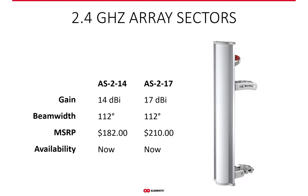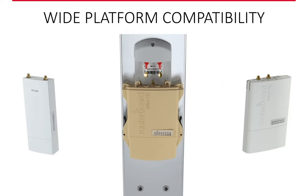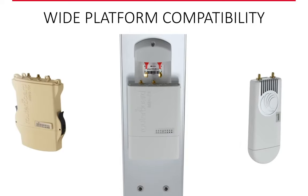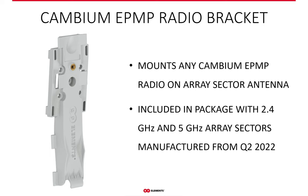The two 2 GHz array sectors are available now, with one at 14 dBi and the other at 17 dBi gain, priced at $182 and $210 USD. The 2 GHz array sector antennas have our standard RPSMA interface that lets you connect most common 2 GHz radios used in the WISP industry, and the interface is now protected by a plastic hood. Starting from the second quarter of 2022, we will include a mount for any Cambium ePMP radio in the package of the 2 GHz and 5 GHz array sector antennas — but not the 3 GHz.